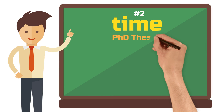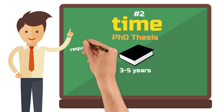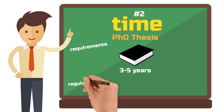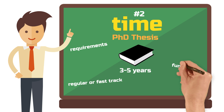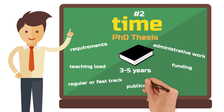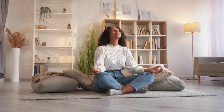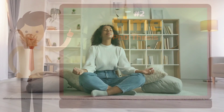Writing a PhD thesis usually takes three to five years — it took me four and a half to complete mine. How long it takes depends on a lot of factors: the requirements of your supervisors, whether you are part of a graduate school or some other fast track, how you fund yourself, how big your teaching load is, the administrative work expected of you, or whether your thesis is based on publications or is a monography. The same advice applies here: do not stress out about the time. Who cares if it takes four years or five years?